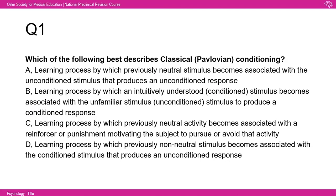That leads us to the MCQs. Question one: which of the following best describes classical Pavlovian conditioning? A: a process by which previously neutral stimuli become associated with an unconditioned stimulus that produces an unconditioned response; B: a learning process by which an intuitively understood conditioned stimulus becomes associated with an unfamiliar stimulus to produce a conditioned response; C: a learning process by which a previously neutral activity becomes associated with a reinforcer or punishment; D: a learning process by which a previously non-neutral stimulus becomes associated with the conditioned stimulus.